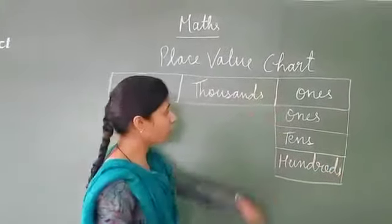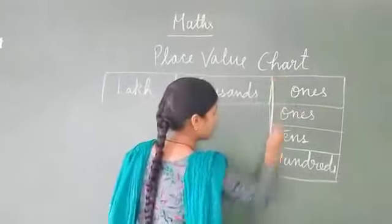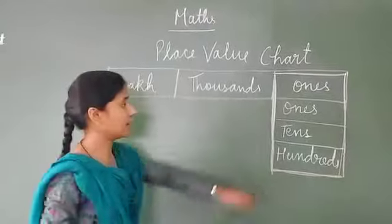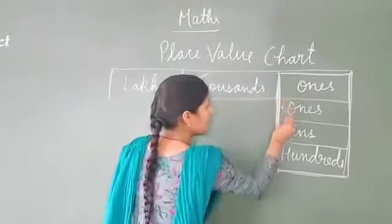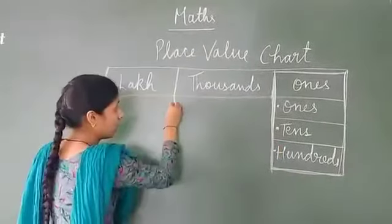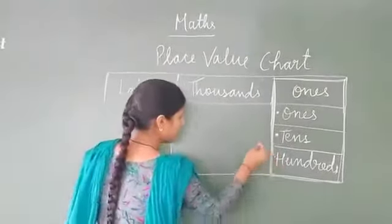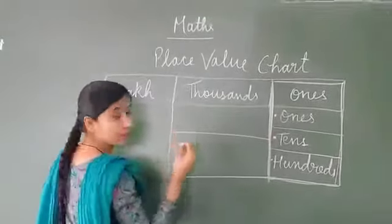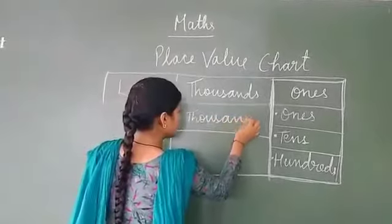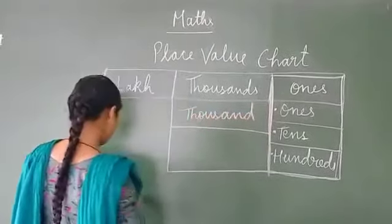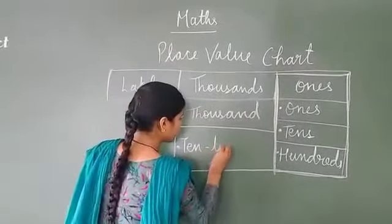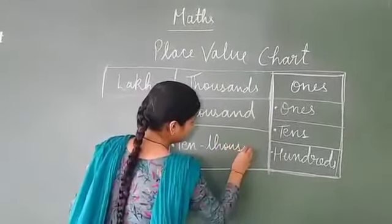So this is the family of ones. Ones has three children: ones, tens, and hundreds. Now thousand has two children — thousand and ten thousand.